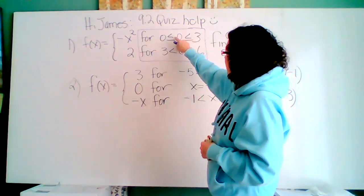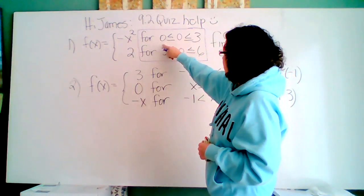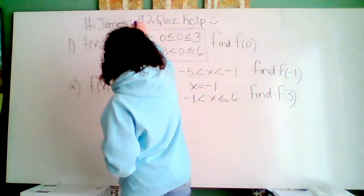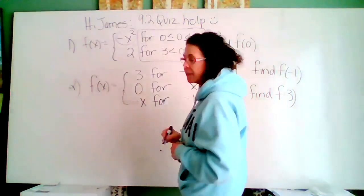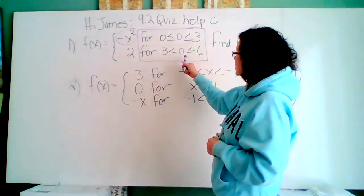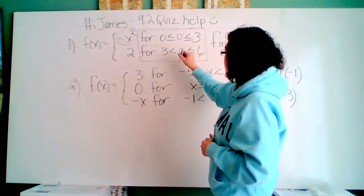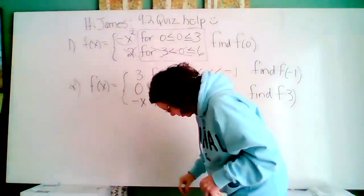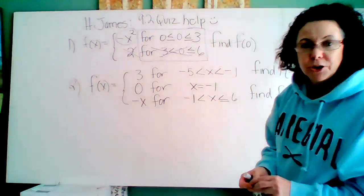Is zero less than or equal to zero? Yes, it is. This means I'm going to use this function. Let's check the next interval though. Is zero in between three and six? No. That is why I'm not going to use that function.